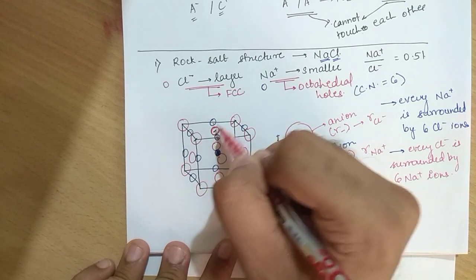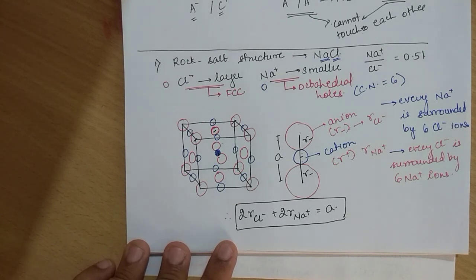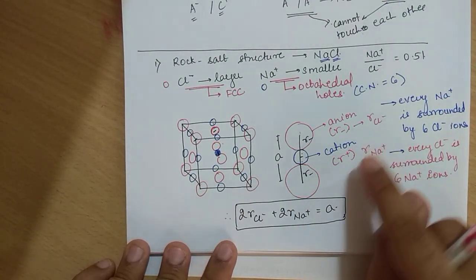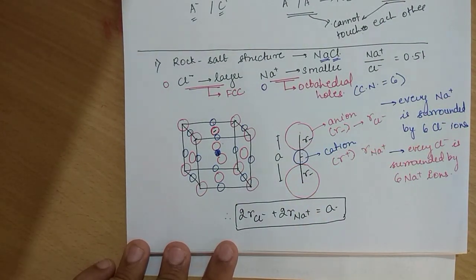Every Cl⁻ simultaneously touches 6 Na⁺ ions, and every Na⁺ simultaneously touches 6 Cl⁻ ions. The relationship between r⁺ and r⁻ given earlier should also now be clear.